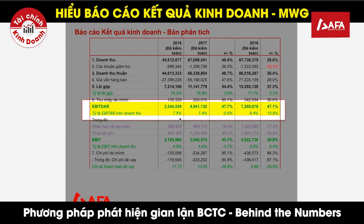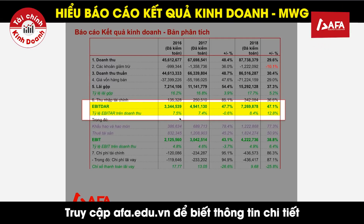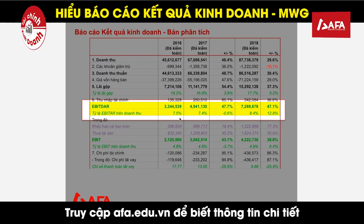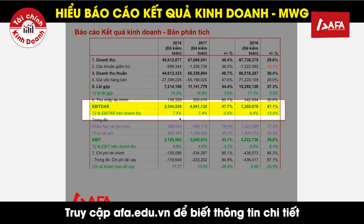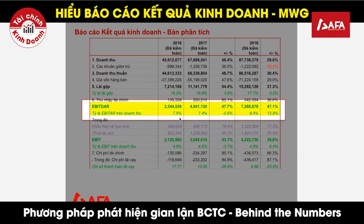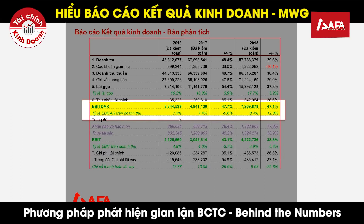Năm 2016, tỷ lệ EBITDAR trên doanh thu là 7,5%, giảm nhẹ trong năm 2017. Tuy nhiên năm 2018, kết quả kinh doanh cho thấy tỷ lệ EBITDAR trên doanh thu tăng trưởng rất mạnh, tăng 12,8% và chiếm 8,4% trên doanh thu thuần. Đây là một trong những yếu tố tác động mạnh mẽ đến hiệu quả kinh doanh của Thế Giới Di Động, chứng minh kết quả kinh doanh đã được cải thiện rất mạnh mẽ từ 2017 đến cuối năm 2018.